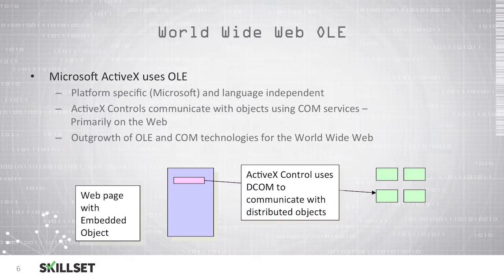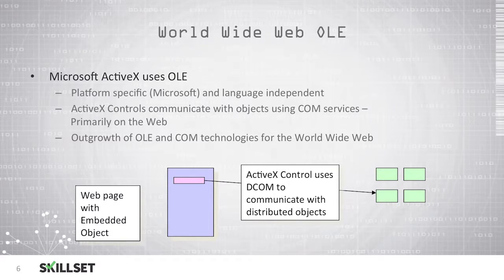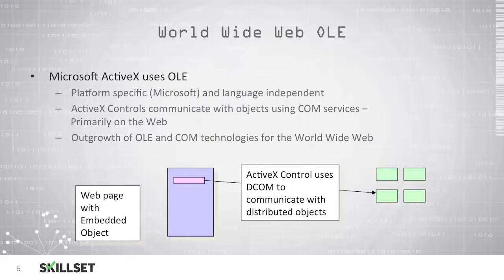Microsoft's ActiveX technology also uses Object Linking and Embedding. It is platform-specific and language-independent. ActiveX controls can communicate with objects using COM services, which primarily occurs on the web. We can see an example at the bottom of the slide where we have a web page with an embedded object that uses ActiveX controls and DCOM to communicate with distributed objects stored in another location.